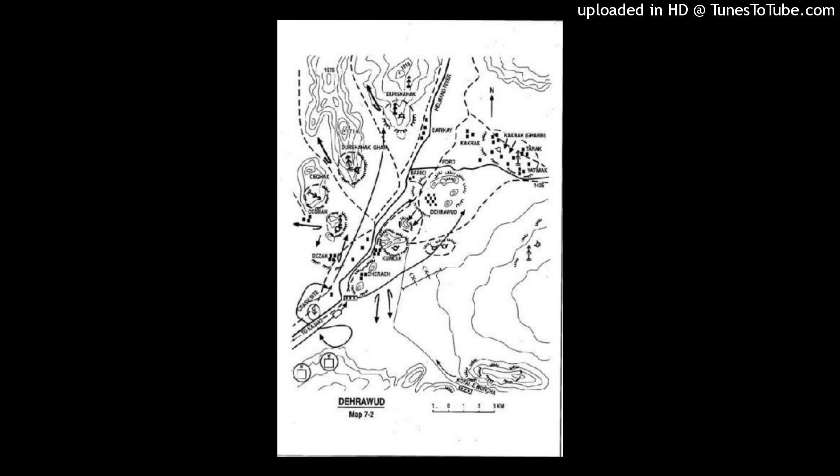Map 7-2. Darrowood. The Darrowood District capital of Darrowood was garrisoned by some 500 government militia who manned security outposts around the town. They were supplied by air since the town was blockaded by the local Mujahideen who controlled all the roads leading into the town. The Mujahideen Council decided to attack the government enclave, dislodge the militia, and consolidate control over the entire valley.